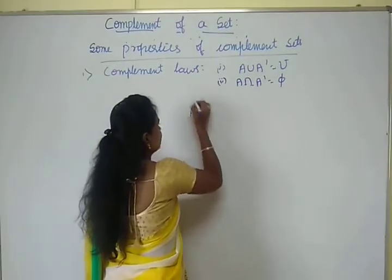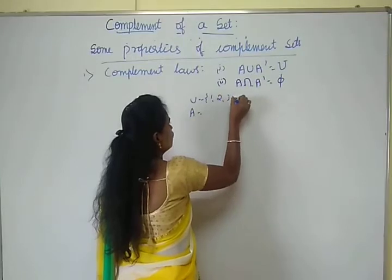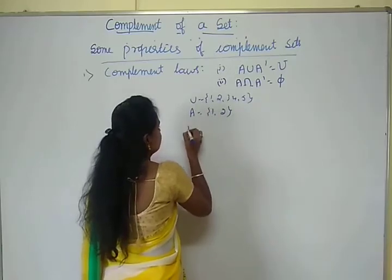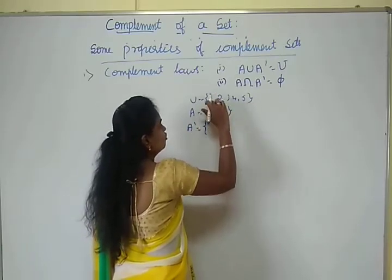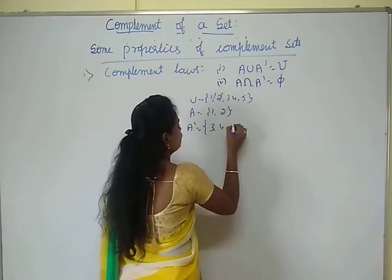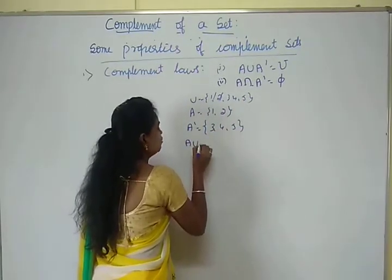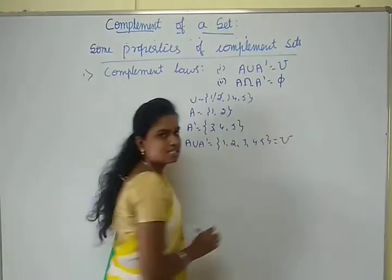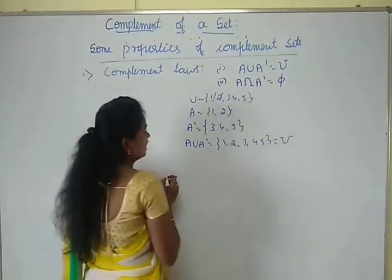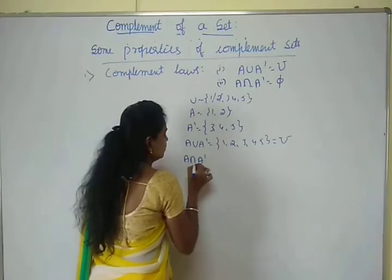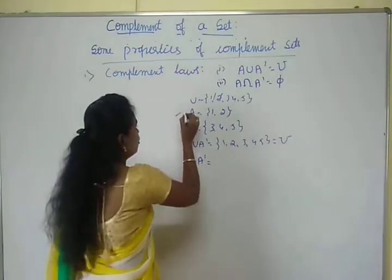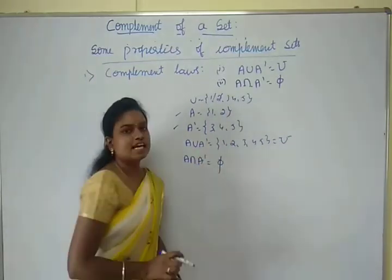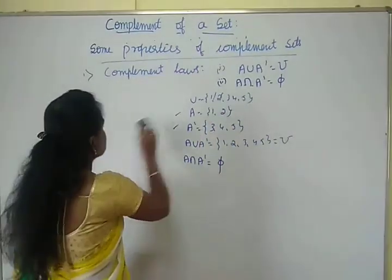For example, let U = {1, 2, 3, 4, 5} and A = {1, 2}. Then A dash is {3, 4, 5} — the elements in U not in A. A union A dash gives {1, 2, 3, 4, 5}, which is nothing but the universal set U. And A intersection A dash: the common element between A and A dash — there is no common element, so A intersection A dash is the empty set.